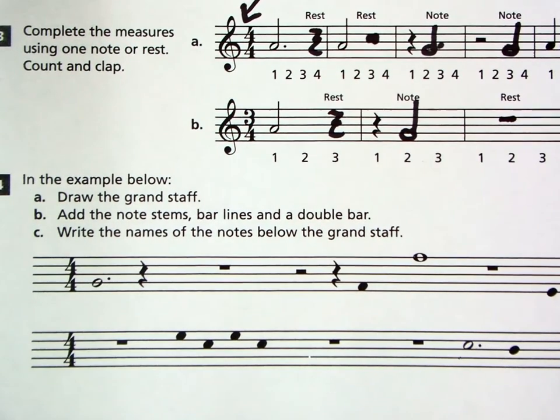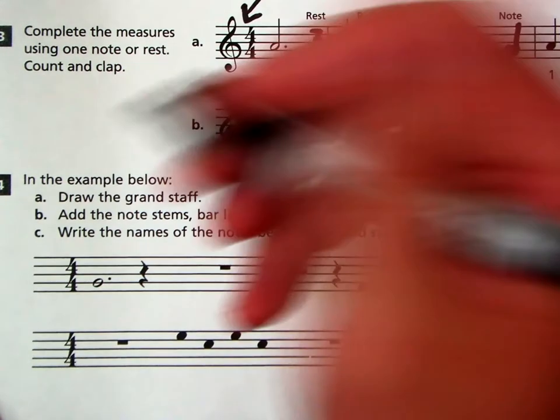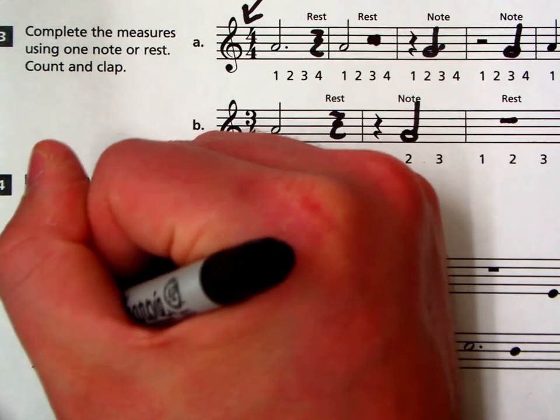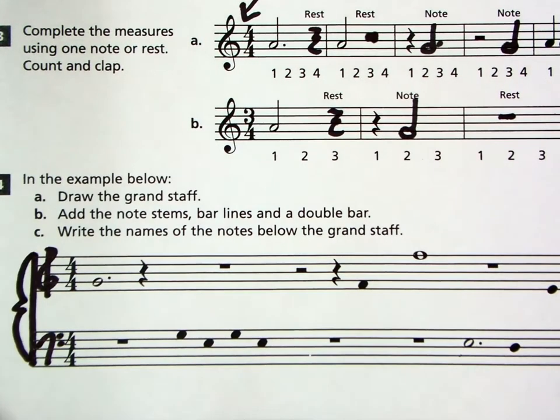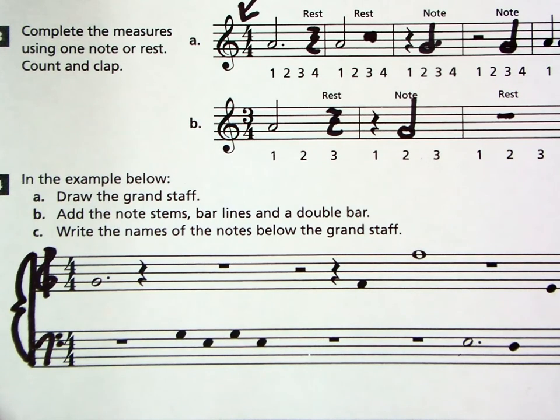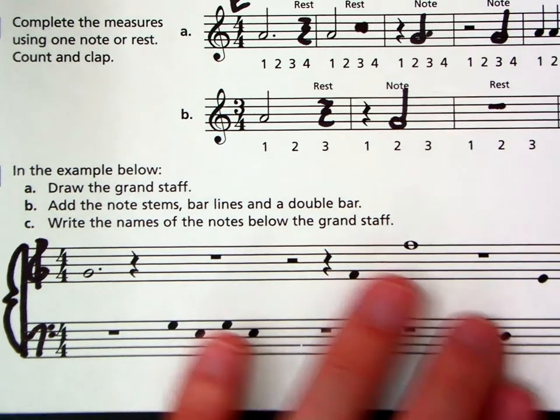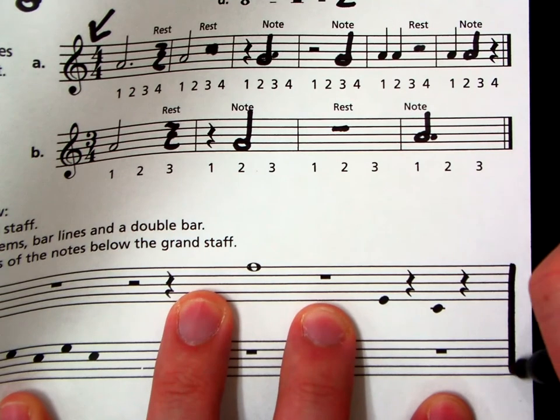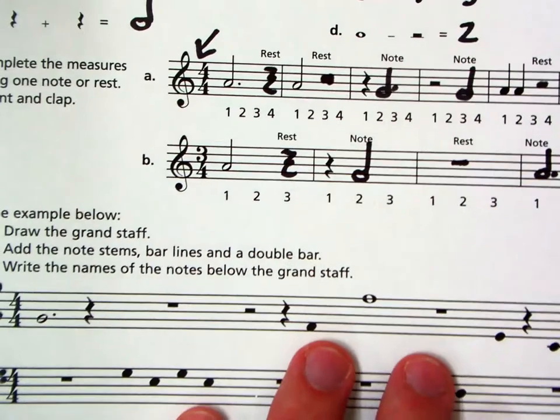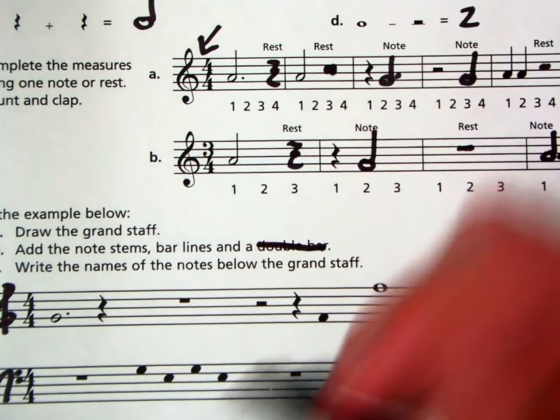Last question here. And I'll adjust as we need to. In the example below, draw a grand staff. So we do that first. We have a treble clef on top. We have a bass clef on bottom. We draw our bar line. And then a brace to connect with. So there's a grand staff. Letter B. Add the note stems, bar lines, and double bars. So I like to do the double bar first. So I'll scoot over here to the end. Then I'll slide the paper. Thicker line. And then a slightly thinner line. So there's the double bar part.